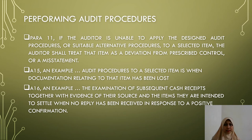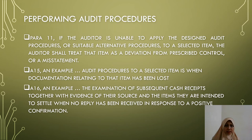Paragraph 11 states that if the auditor is unable to apply the designed audit procedures or suitable alternative procedures to a selected item, the auditor shall treat that item as a deviation from prescribed control in the case of a test of controls, or as a misstatement in the case of test of details. Under A15, the example given is that the documentation relating to that item has been lost. Under A16, the example is examination of subsequent cash receipts together with evidence of their source and the items they are intended to settle, when no reply has been received in response to a positive confirmation.